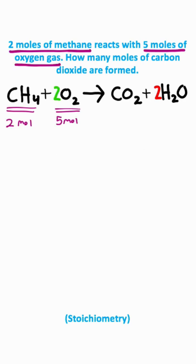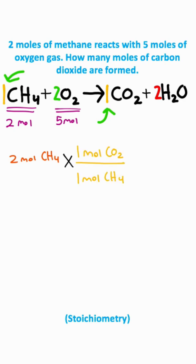So notice here that we have two moles of methane and five moles of oxygen gas. We're going to start with the two moles of methane. I'm going to multiply it by the ratio of coefficients that we have on carbon dioxide and methane. So what I'll have is one mole of carbon dioxide over one mole of methane. Now if I cancel the methane, that's just going to give me two moles of carbon dioxide.